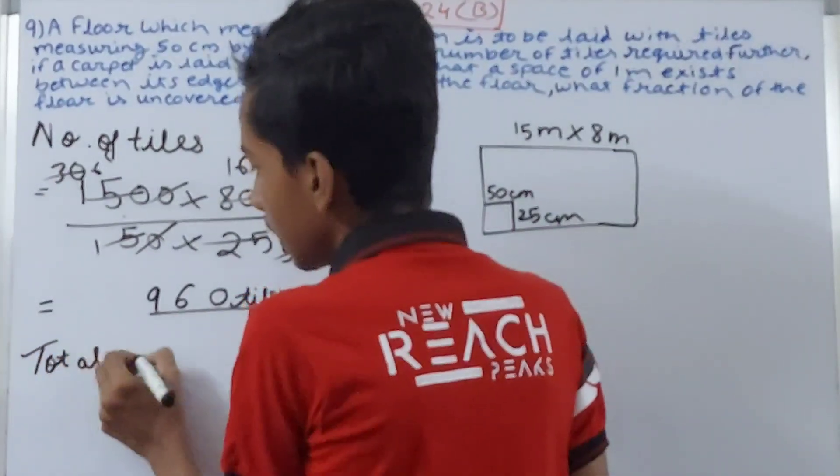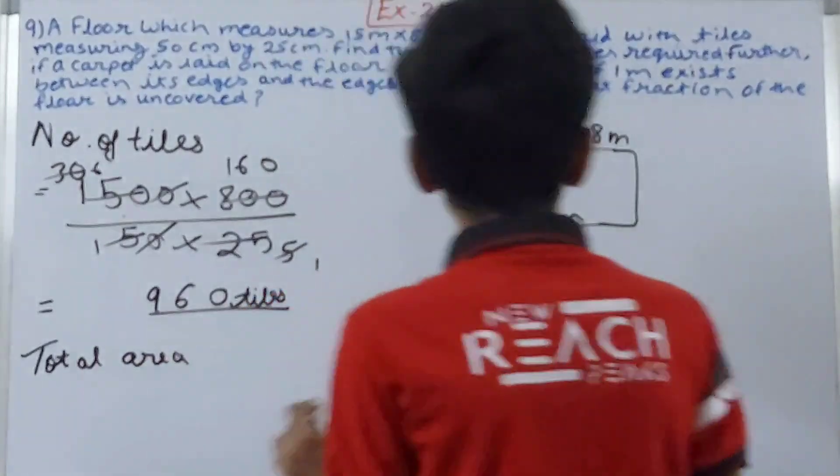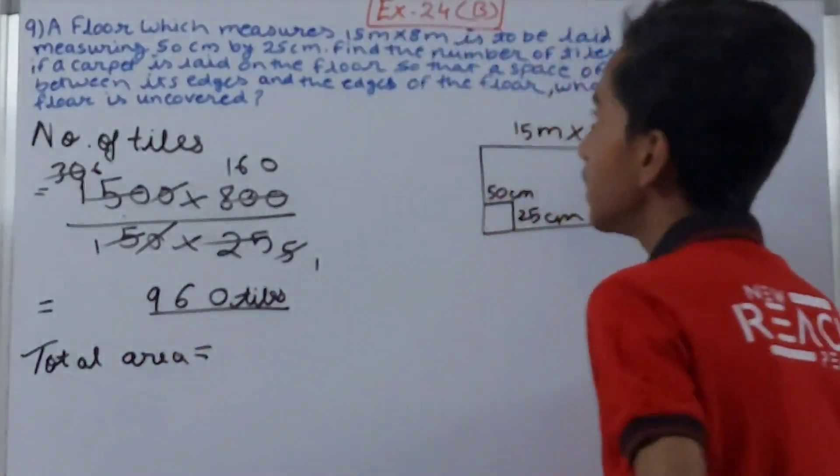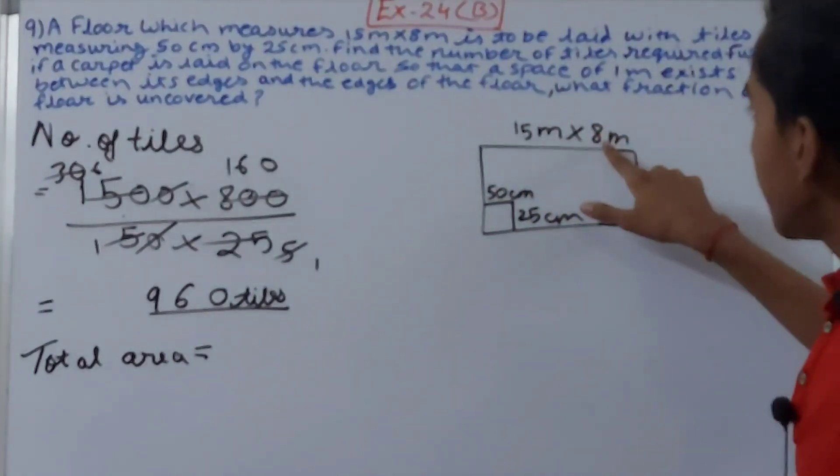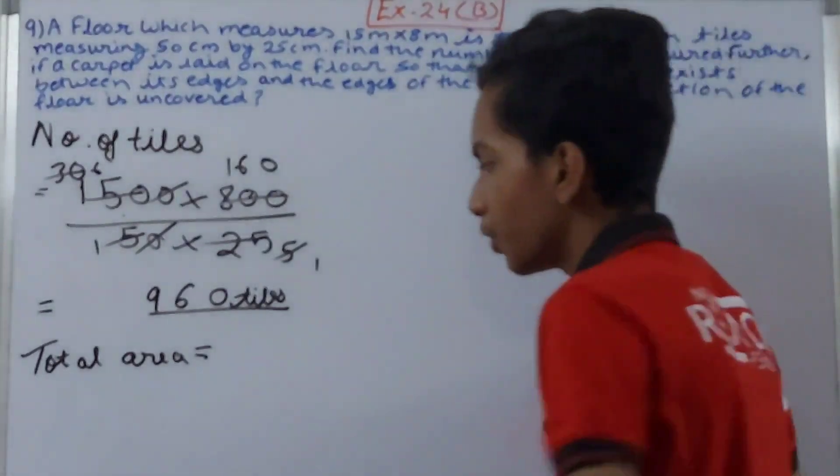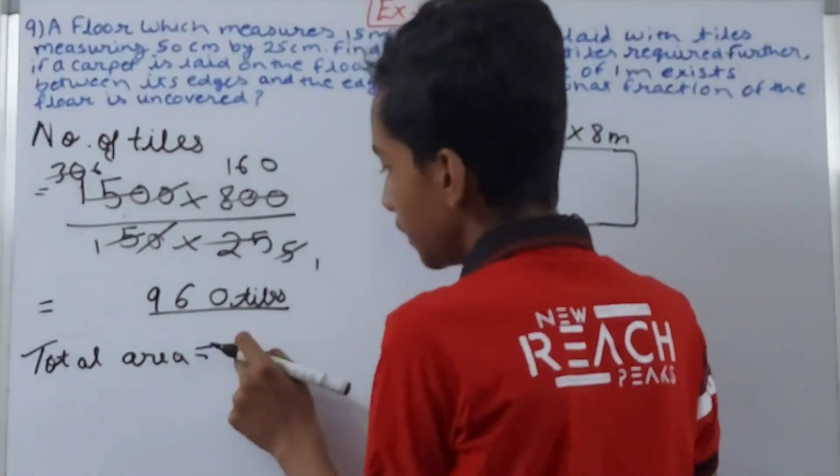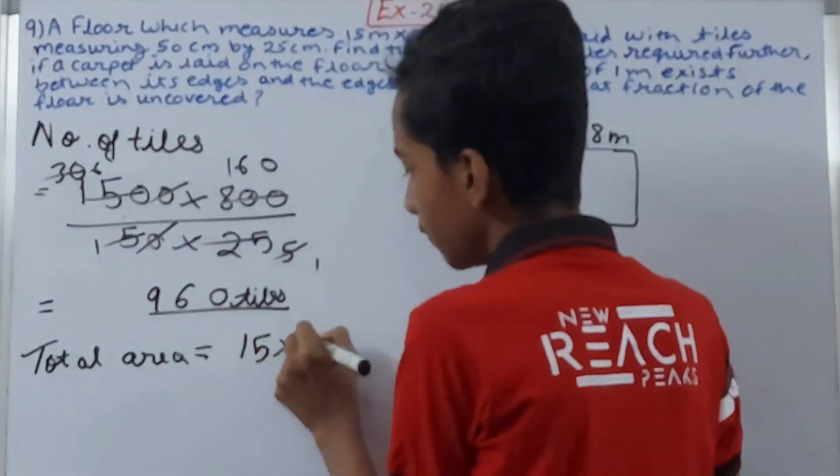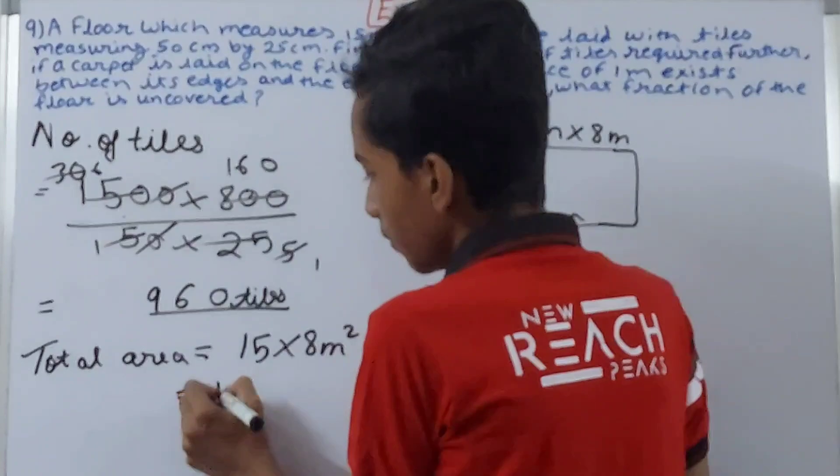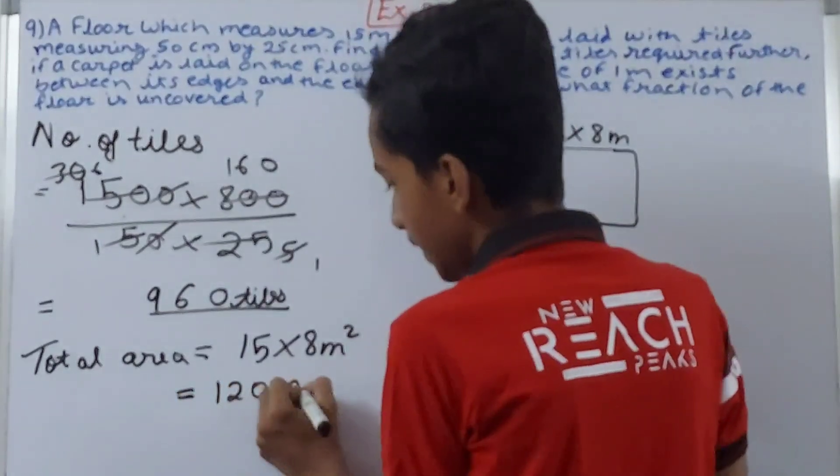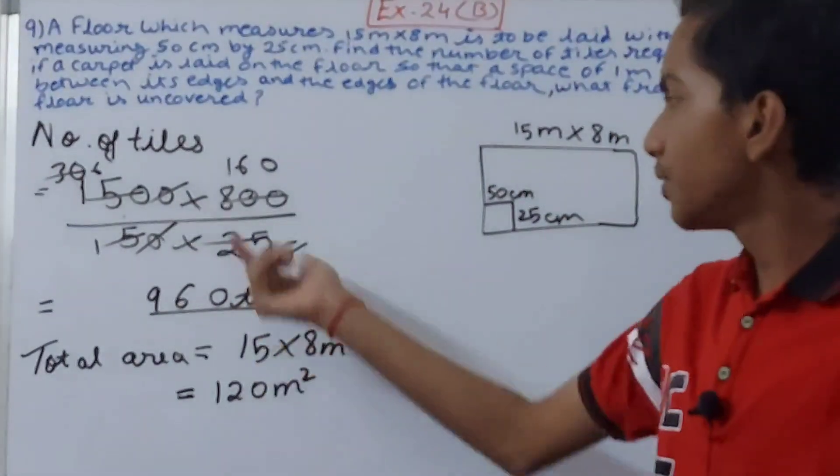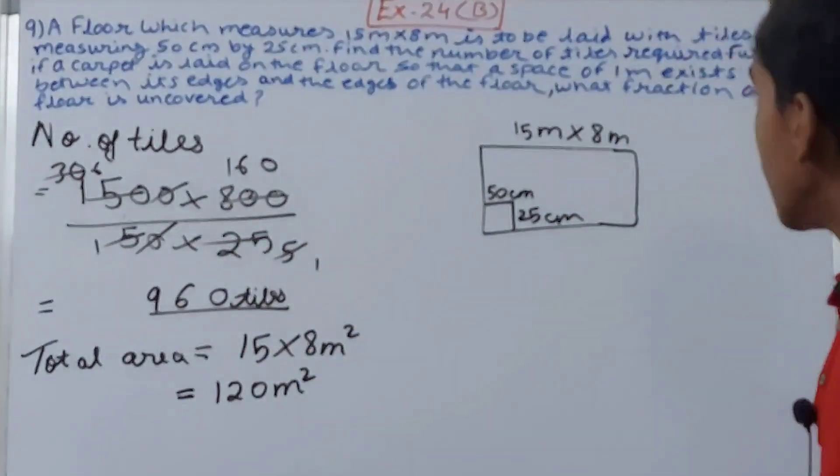Total area means area of the entire floor will be 15 and 8. We already have 15 into 8. Total area becomes 15 into 8 square meters, so that will be 120 square meters. This is the total area and now you can convert this into square centimeters, up to you.